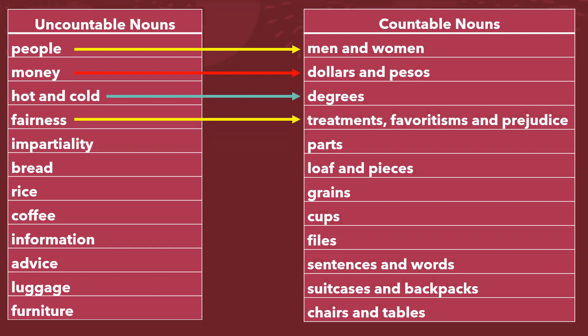Fairness, treatments, favoritisms and prejudice. Impartiality? Well, we can talk about parts — all the parts involved. But what about bread? It's a simple word, bread. The bread cannot be counted, but we can make loaves, or loves, and pieces.